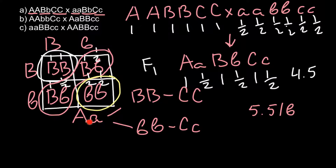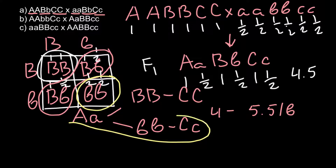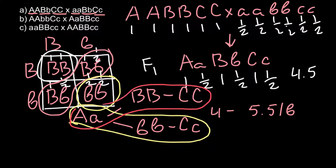For the minimum weight in this cross, the minimum contributions are: one pound (gene A heterozygous), one pound (gene B homozygous recessive bb), and half plus half pound (gene C heterozygous Cc). Counting: one plus one equals two, plus four times one half equals four. So the minimum phenotype produces four pounds. The range for this cross is between four pounds and five point five pounds.